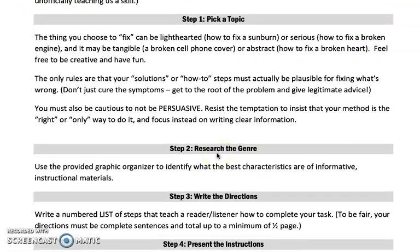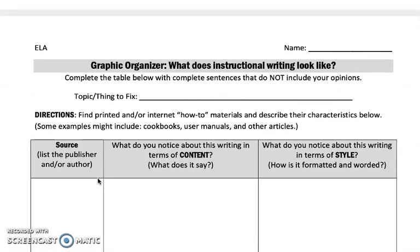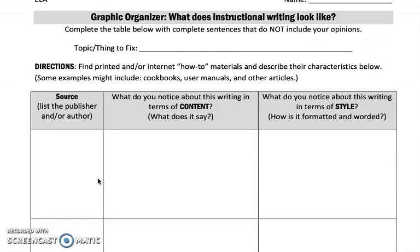Step two is the graphic organizer. You are going to look at it and identify what the best characteristics are of informative instructional materials. You don't necessarily have to be looking at instructions for the specific thing you want to fix. So if you're going to use the example of how to fix a sunburn, you don't need to look up how to fix a sunburn online. You can look up things like cookbooks, user manuals, other articles, or other how-to's.